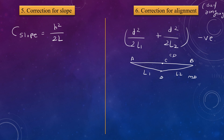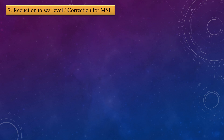The seventh correction is the reduction to sea level, or correction for mean sea level. The formula is: C_mean sea level = (l × h) / R, and this correction is always negative. These are the seven tape corrections.